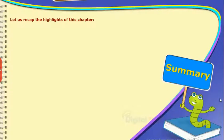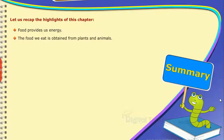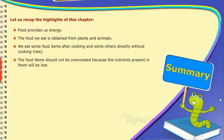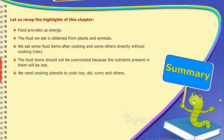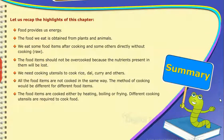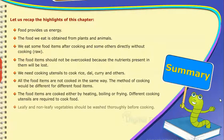Summary. Let us recap the highlights of this chapter. Food provides us energy. The food we eat is obtained from plants and animals. We eat some food items after cooking and some others directly without cooking. The food items should not be overcooked because the nutrients present in them will be lost. We need cooking utensils to cook rice, dal curry, and others. All food items are not cooked in the same way — the method of cooking is different for different food items. Food items are cooked either by heating, boiling, or frying. Different cooking utensils are required to cook food. Leafy and non-leafy vegetables should be washed thoroughly before cooking.